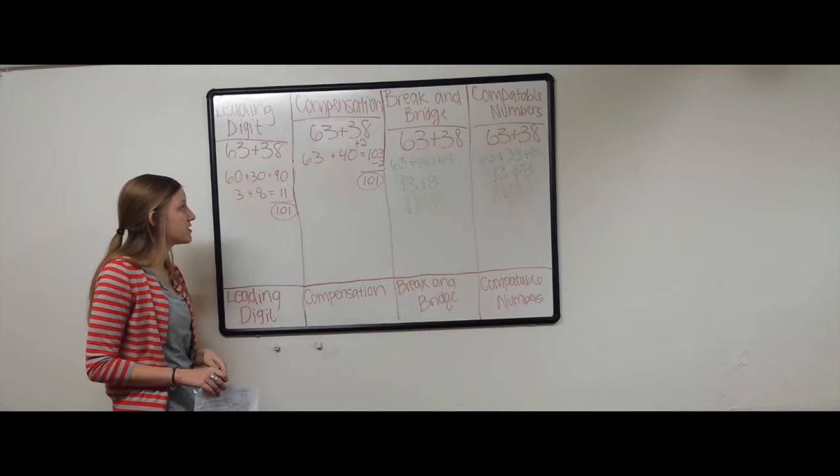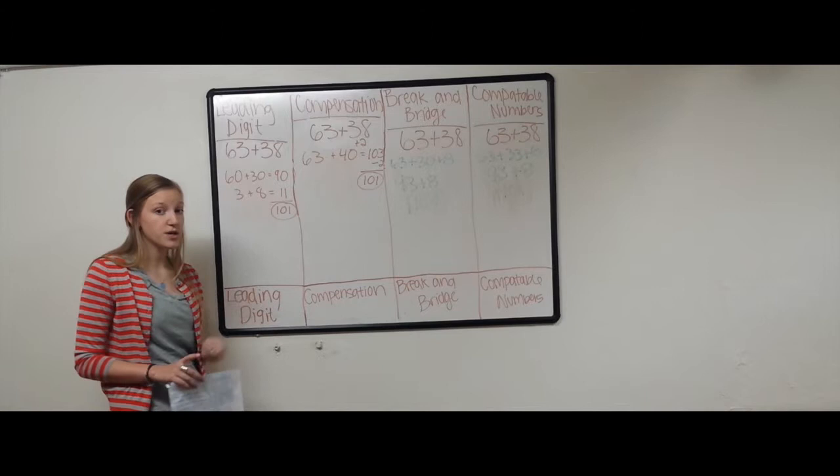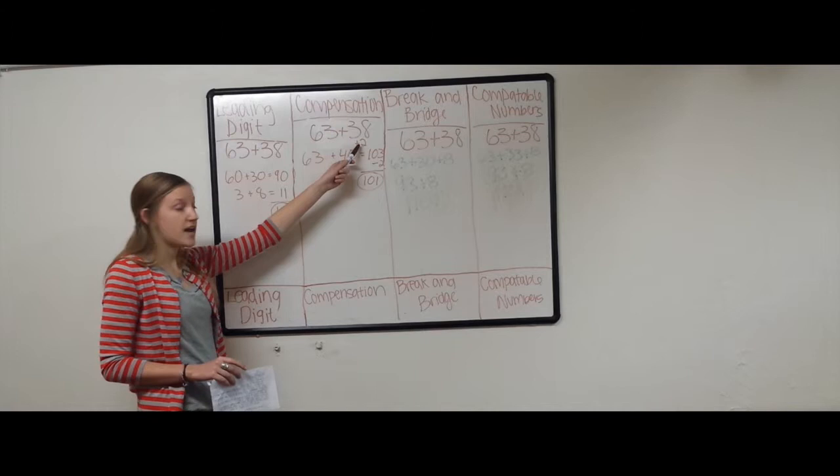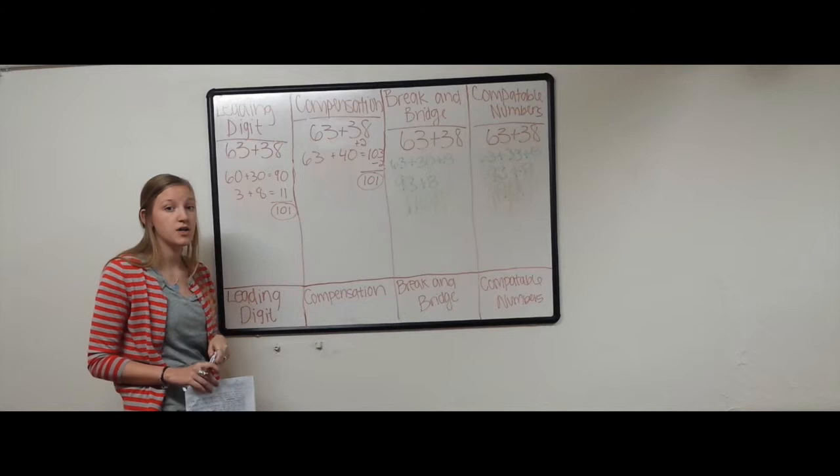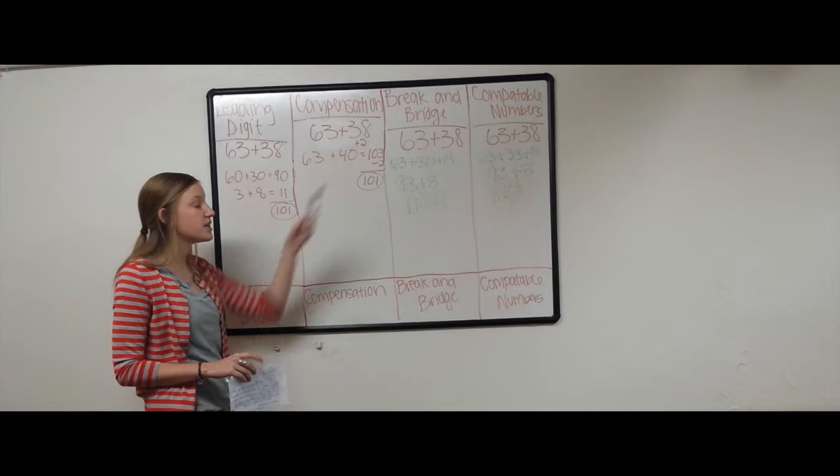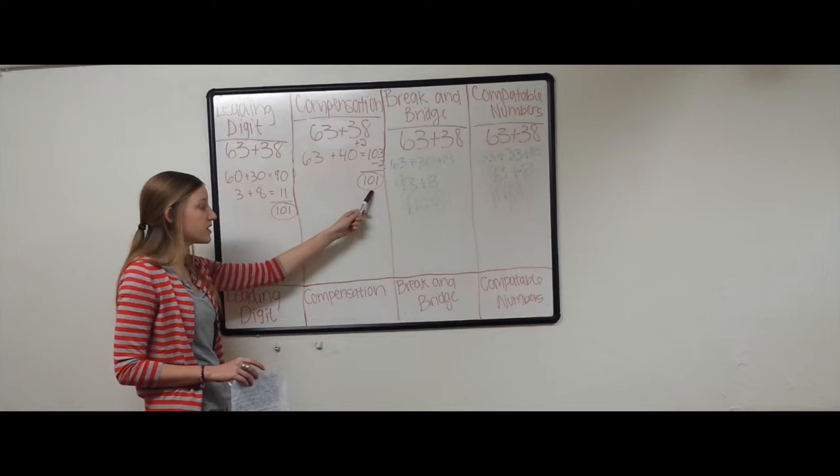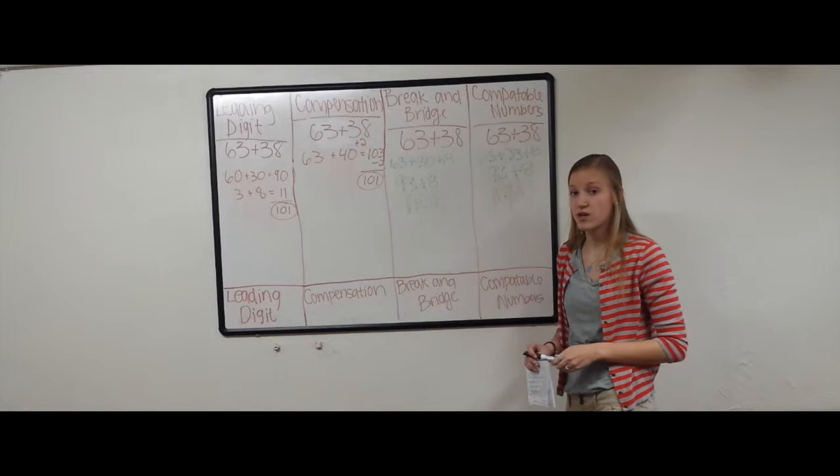Moving on to compensation. We have 63 plus 38. Lauren chose to leave the 63 and change the 38 into 40 to a much easier number. By changing it to 40, we had to add 2 to the 38. So we will have to subtract 2 later on in our problem. 63 plus 40 equals 103. Not forgetting to subtract the 2, we get 101.